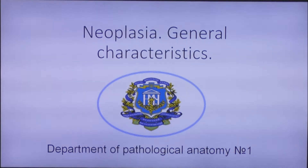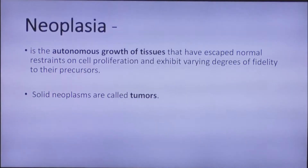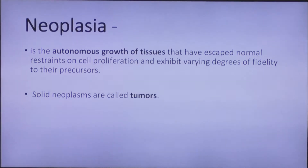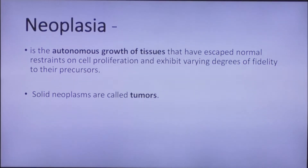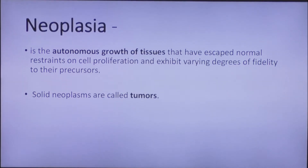The topic of my lecture is neoplasia — general characteristics of neoplasia. Neoplasia is the autonomous growth of tissues that have escaped normal restraints on cell proliferation and exhibit varying degrees of fidelity to their precursors. Neoplasia arises from mutations in genes that regulate cell growth, apoptosis, or DNA repair. Solid neoplasms are called tumors.